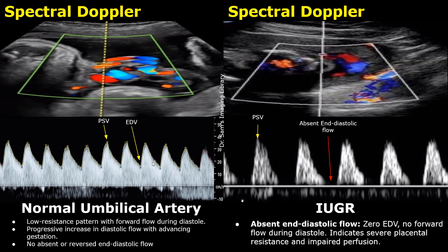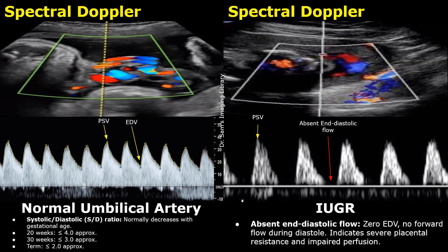As the pregnancy progresses, the diastolic velocity increases gradually. The systolic-diastolic ratio, or SD ratio, is an important parameter in fetal well-being assessment. It is calculated by dividing PSV by EDV. Since the diastolic velocity increases over time, the SD ratio will decrease with increasing gestational age. Normally, the SD ratio should be below 4 up till 20 weeks approximately. By 30 weeks, it should be below 3.